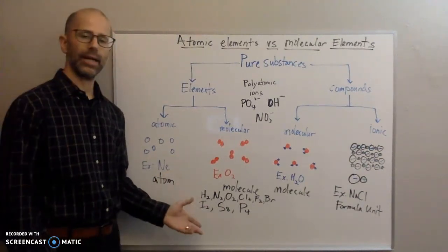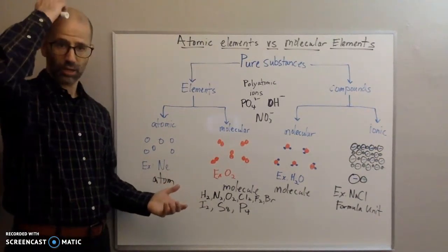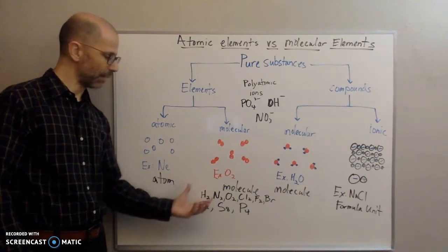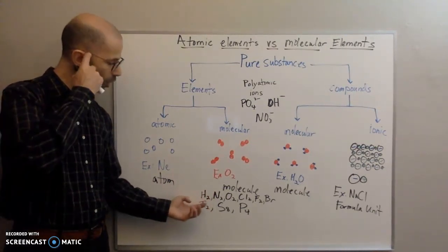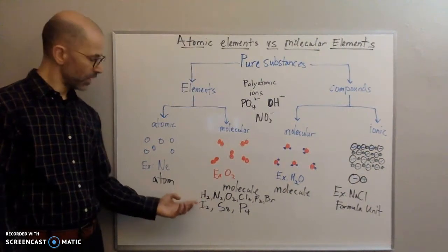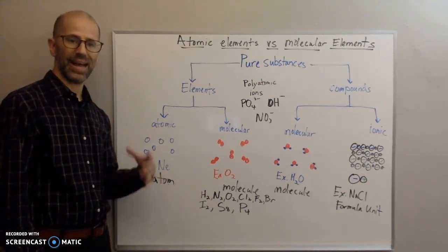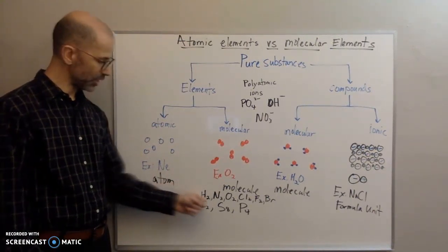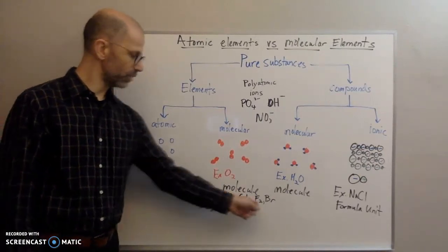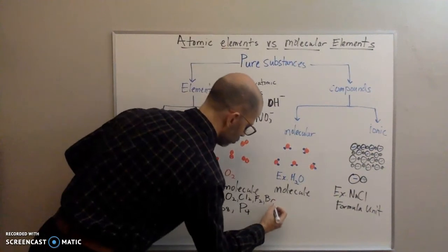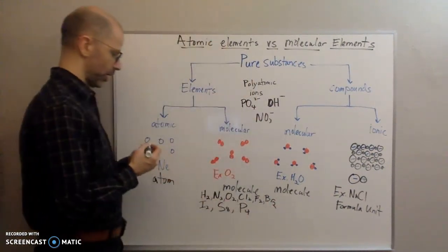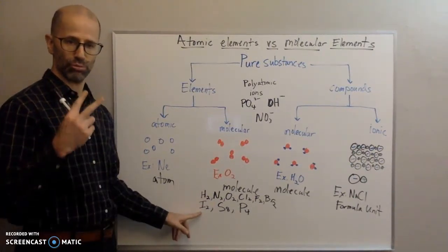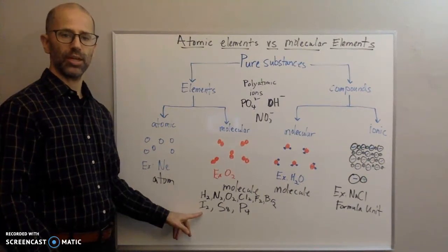The thing to keep in mind is that most of your elements don't exist as diatomic molecular elements. So here are the ones that you need to know. The diatomic elements, diatomic meaning two atoms, there's seven of them: hydrogen, nitrogen, oxygen, chlorine, fluorine, bromine, and iodine. Those are the seven diatomic elements with two atoms in your molecule.